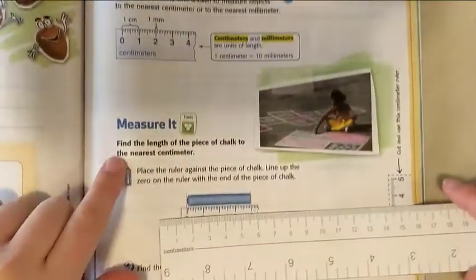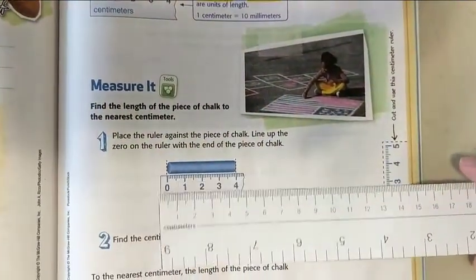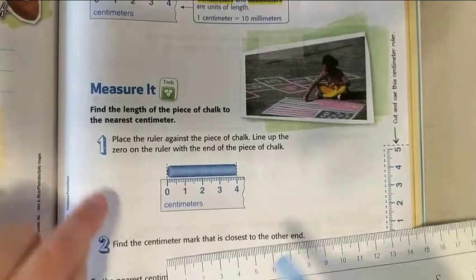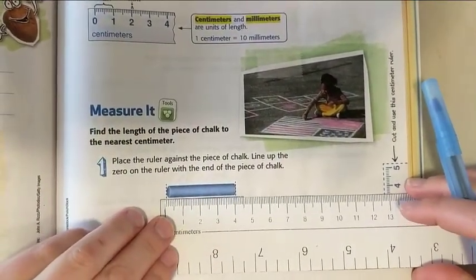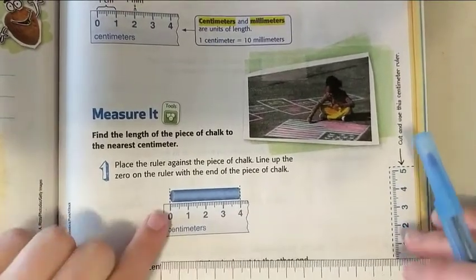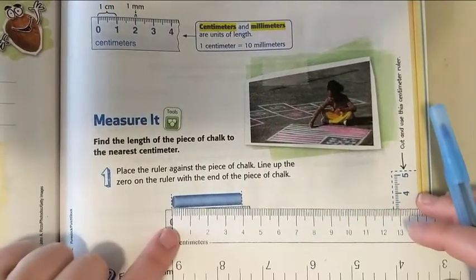Find the length of the piece of chalk to the nearest centimeter. They put a ruler here for us, but we could put our own down if we want. They lined it up nicely with the zero mark right at the end of the chalk, or we could put our zero mark on our ruler right at the end of the chalk.